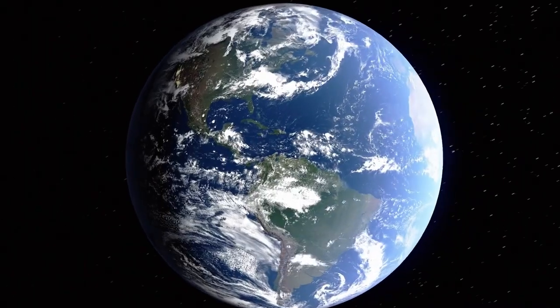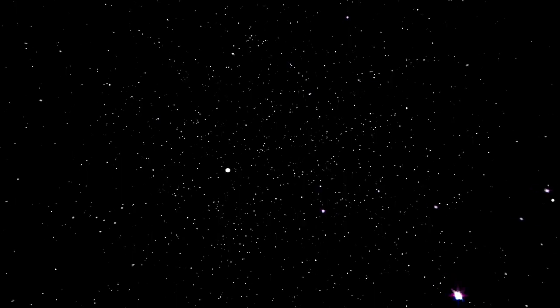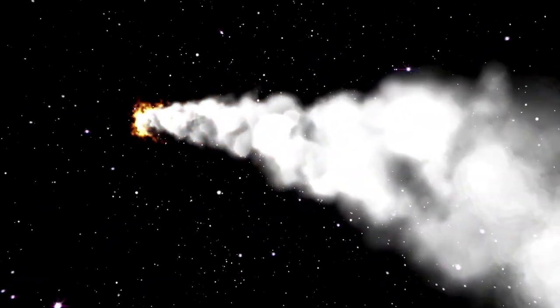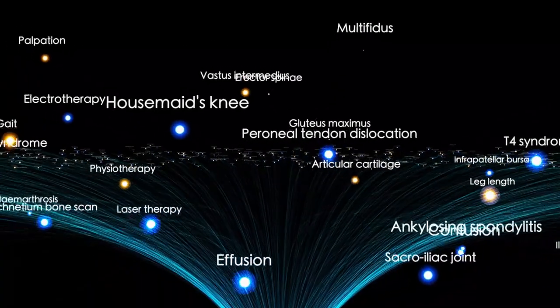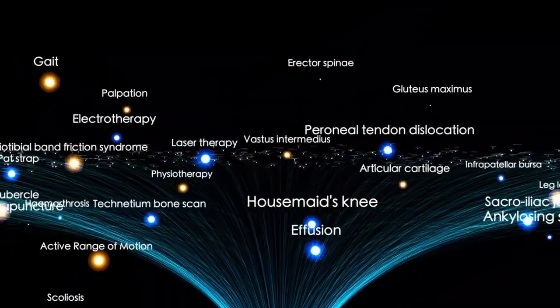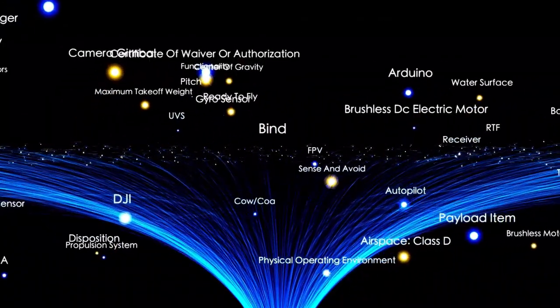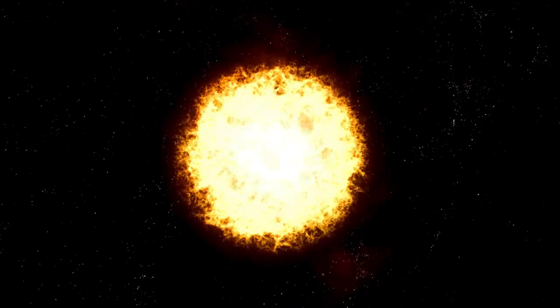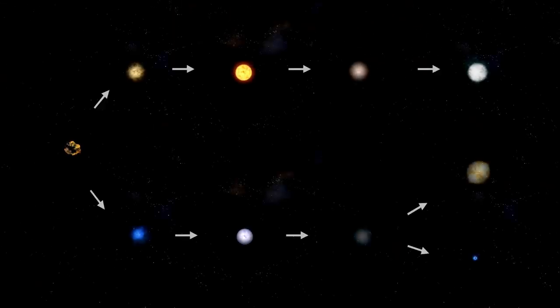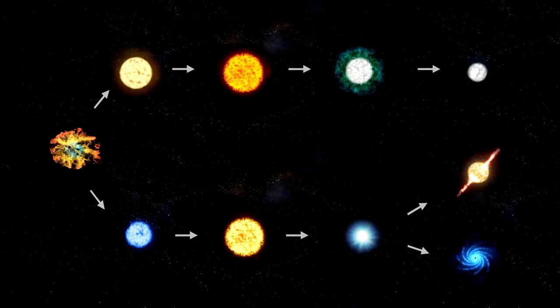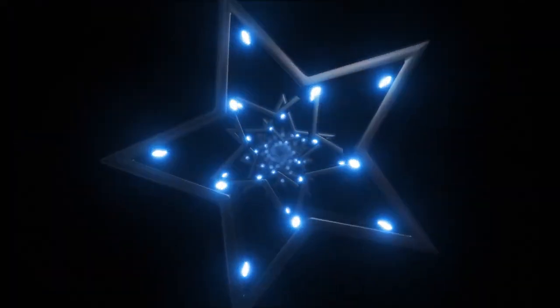Still, it's important to approach this with cautious excitement. The increase in brightness doesn't guarantee an imminent supernova. Red supergiants are infamous for unpredictable behavior, and this could be another phase in Betelgeuse's long and chaotic life. But the scale of this change, 250% brighter in such a short time, is certainly not ordinary, suggesting that something noteworthy is unfolding inside the star.